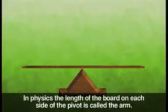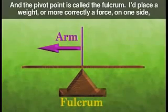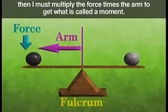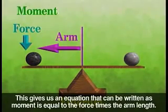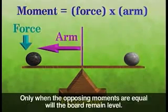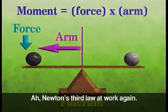In physics, the length of the board on each side of the pivot is called an arm, and the pivot point is called a fulcrum. If you place a weight — or more correctly, a force — on one side, you must multiply the force times the arm to get what is called a moment. This gives us the equation: moment equals force times arm length. Only when the opposing moments are equal will the board remain level. That's Newton's third law at work again.